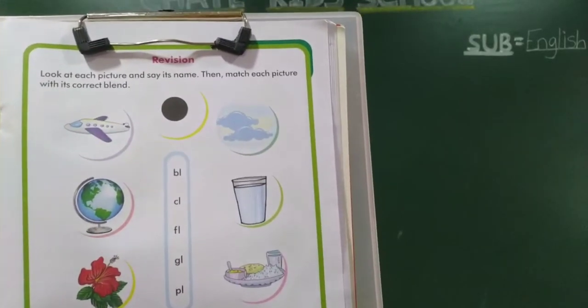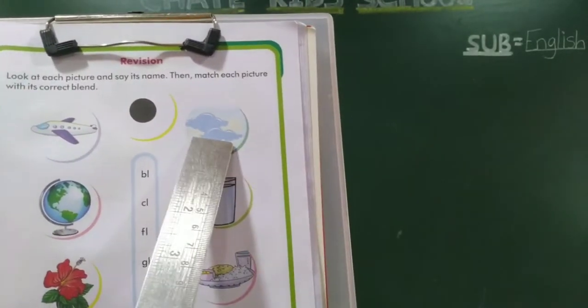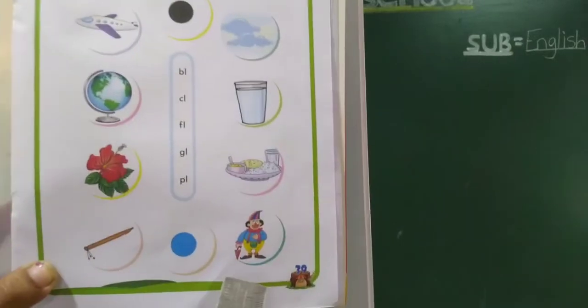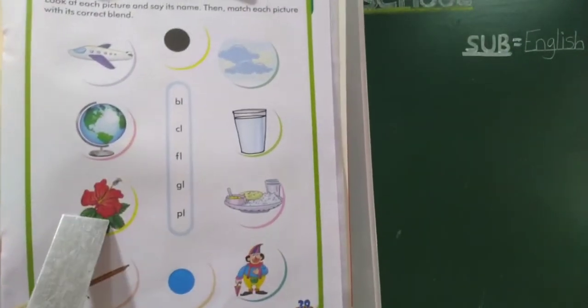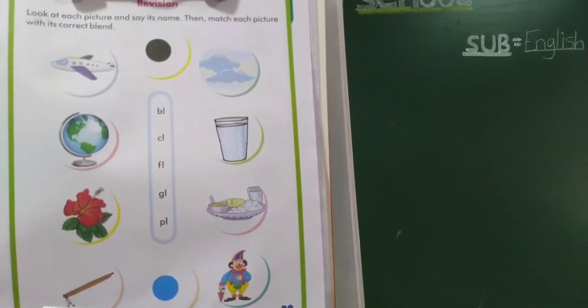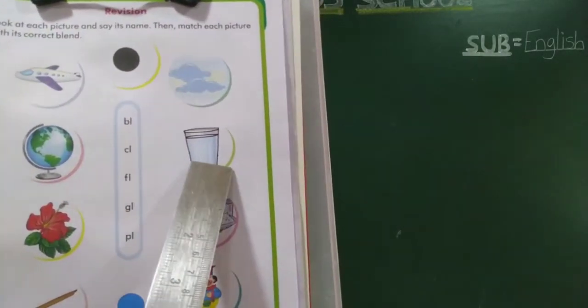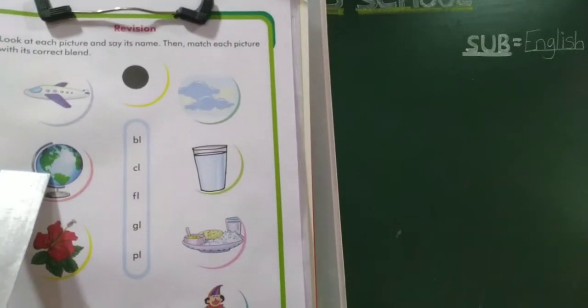CL, what is it? Cloud, clone. FL, flower, flute. GL, glass, globe.